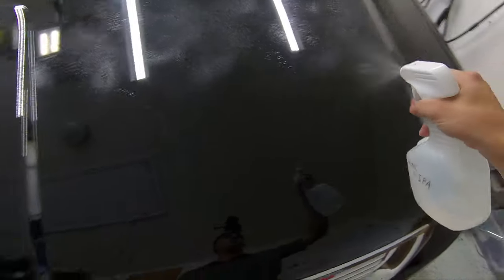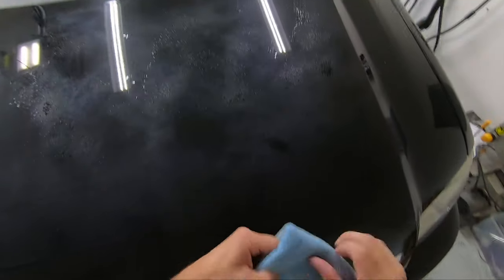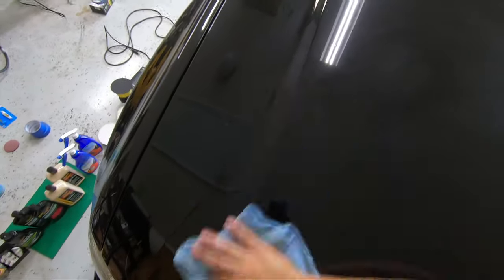Once we're done with the clay bar, we move on to an IPA wipe down to ensure there are no oils, waxes, or other residues on the surface. After this, I mask out the sections for the different products, though I didn't see much of a reason to record that, so it'll just skip to the next section where we begin polishing.